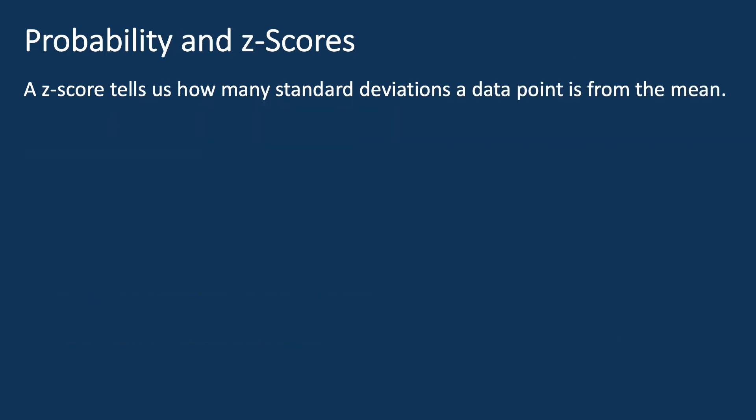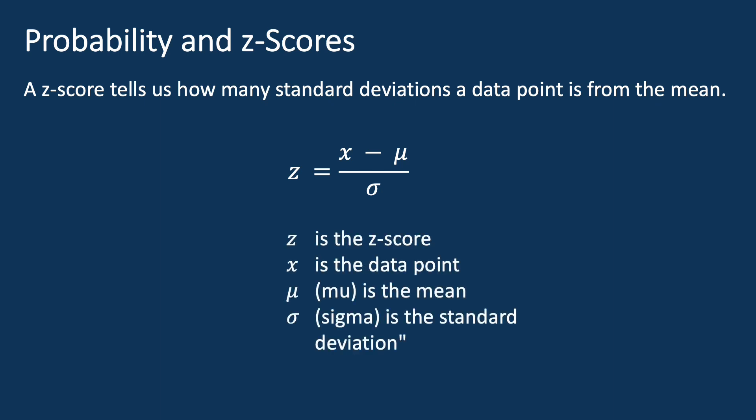To calculate probabilities related to normal distributions, we use Z-scores. A Z-score tells us how many standard deviations a data point is from the mean. The formula for a Z-score is: Z equals X minus mu over sigma, where Z is the Z-score, X is the data point, mu is the mean, and sigma is the standard deviation.